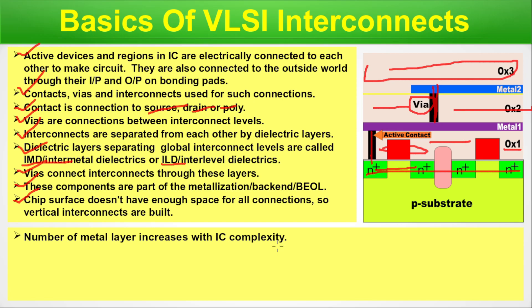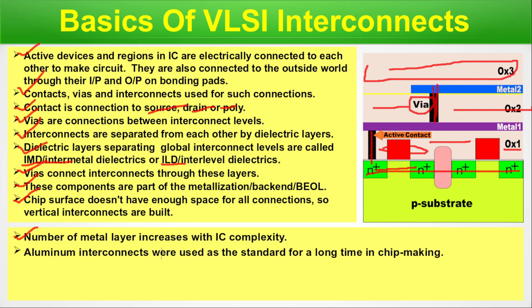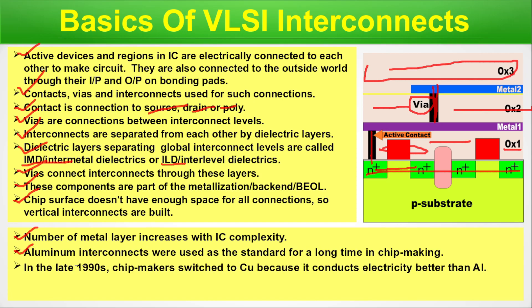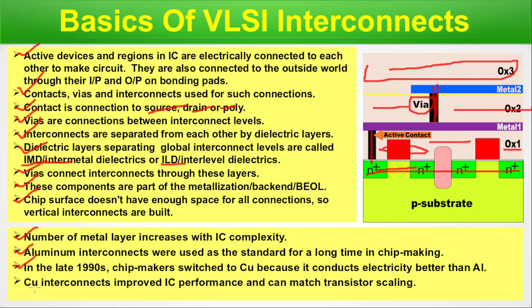As technology progresses and device numbers increase to realize more complex functionality, the number of metal layers also increases accordingly. Aluminum interconnects were used as the standard for a long time in chip making. In the late 90s, chip makers switched to copper because it conducts electricity better than aluminum. Copper interconnects improved IC performance and can match transistor scaling, following Moore's law. When device dimensions are scaled, the vias and contacts also have to be scaled accordingly.